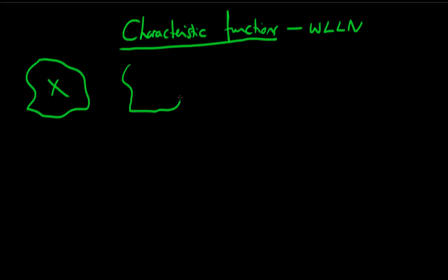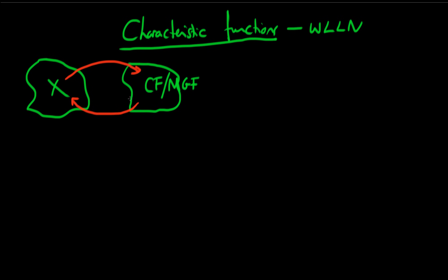Well, sometimes that's not possible, but I can transform my random variable to a new space — which I'm going to call characteristic function space — or another transform you can think about is something called the moment generating function space. If I can prove something about my random variable in this space, then it turns out that this holds when I transform back, so I would have actually proved the thing I was trying to prove about my original random variable.